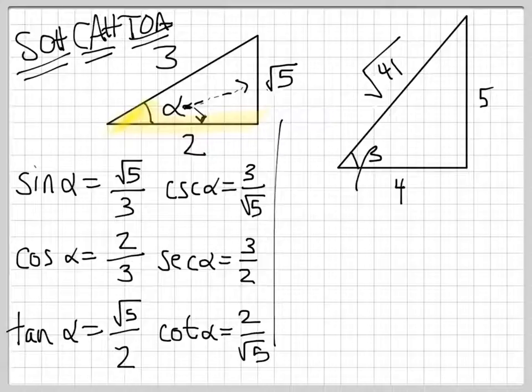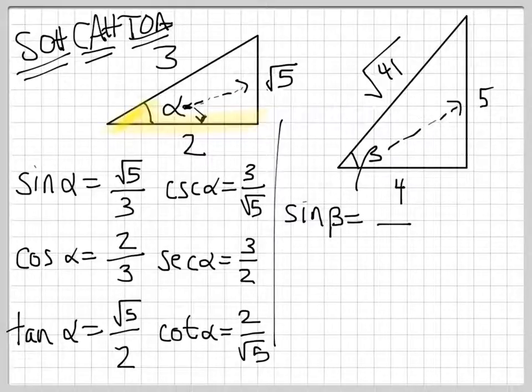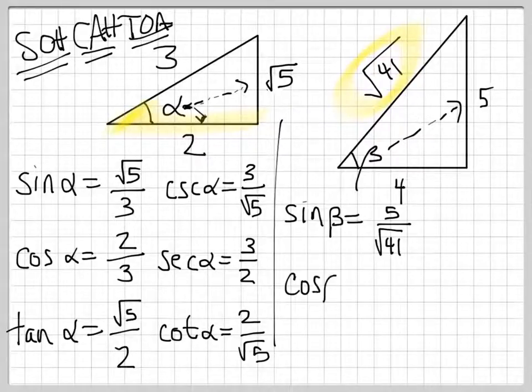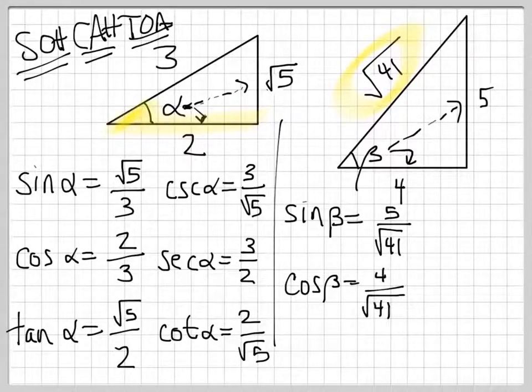If we come over here and we do beta now, sine of beta, remember it's opposite over hypotenuse. There's the opposite. Up here is the hypotenuse. And so it's 5 over radical 41. Cosine of beta. Cosine is adjacent, which is 4 over hypotenuse and tangent is opposite over adjacent, and so it's 5 over 4.